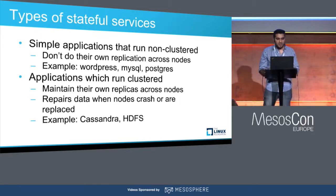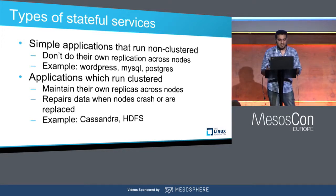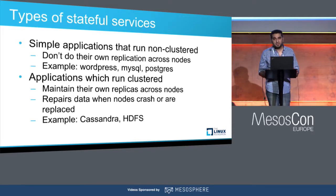The second type is where applications do their own replication across nodes. In case a node dies or fails, there is always another copy of the data on the cluster. If the crashed node comes back online, replication takes care of repairing the data it missed. This repair can be manually triggered or automatic depending on the application. Examples of the first type are WordPress or MySQL, while the second type includes Cassandra or HDFS.